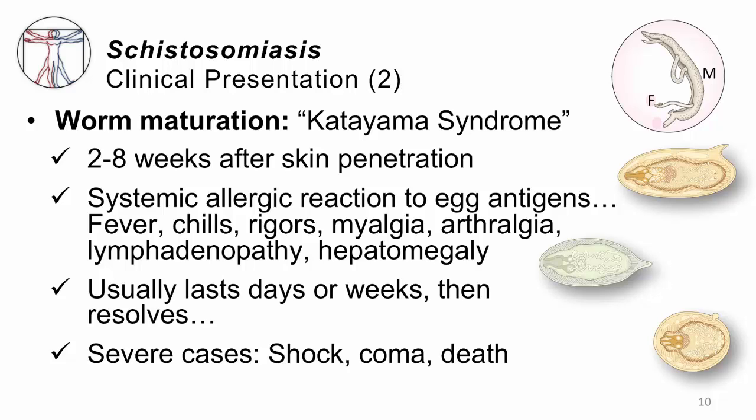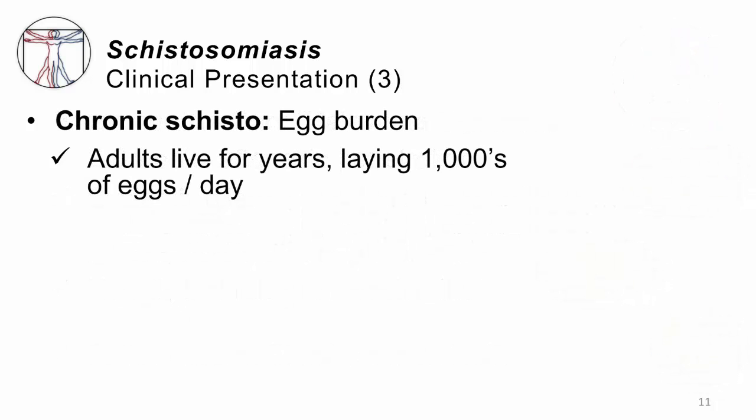Unfortunately, there are cases in which the antigen load is huge and the immune response is so big that patients can develop shock — a systemic issue related to low blood pressure — even coma or death. Then there's chronic schisto, which is all about the eggs: how many eggs are inside your tissue. The adults can live for years and lay thousands of eggs per day.